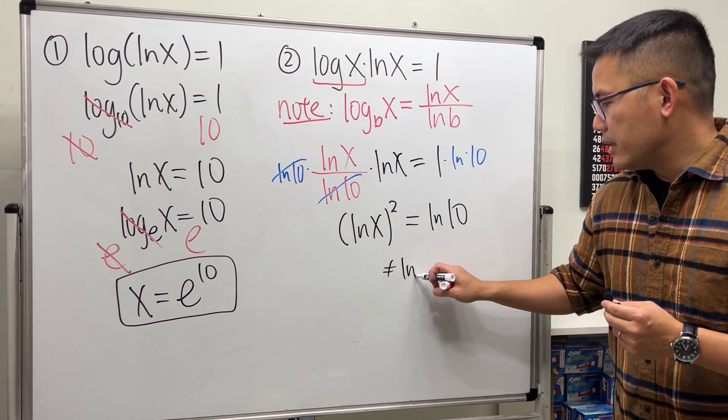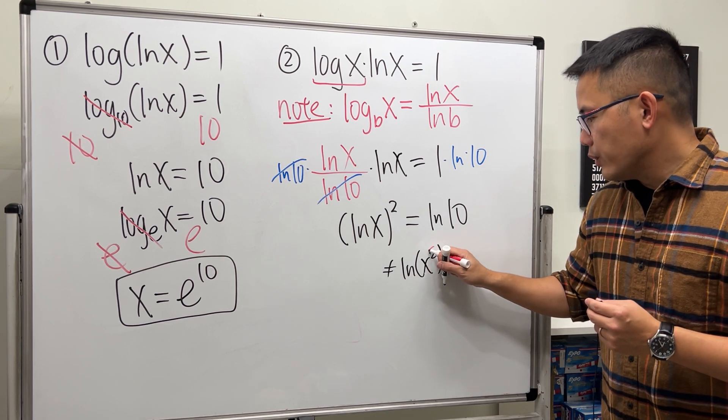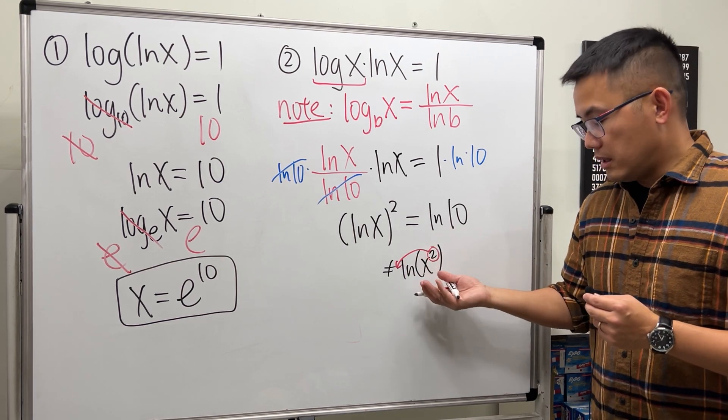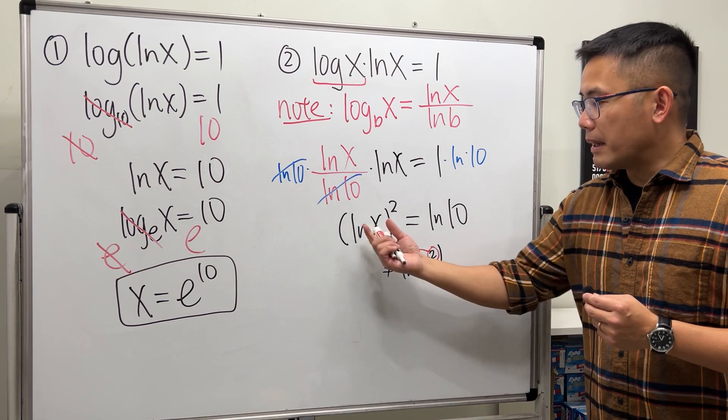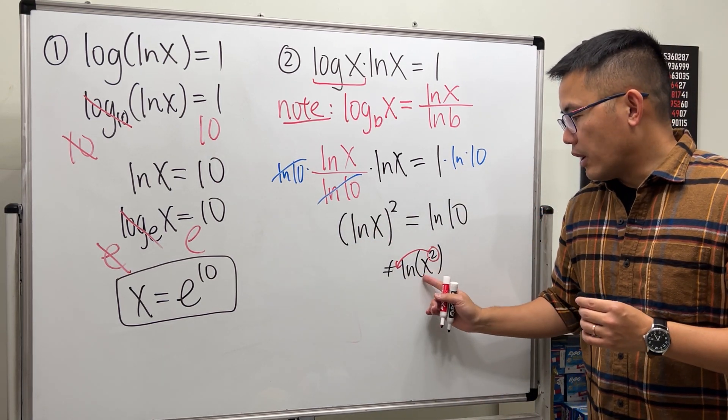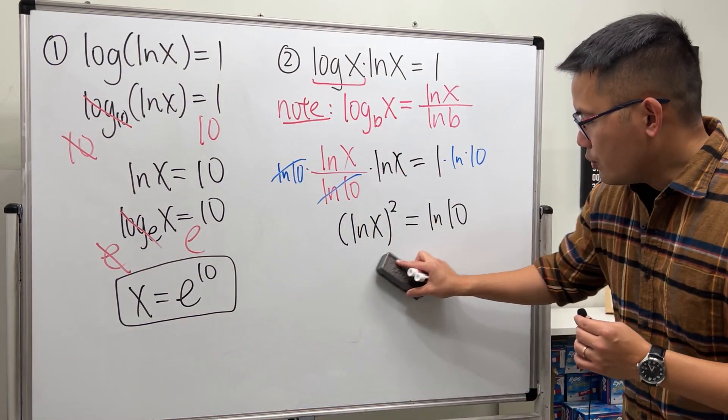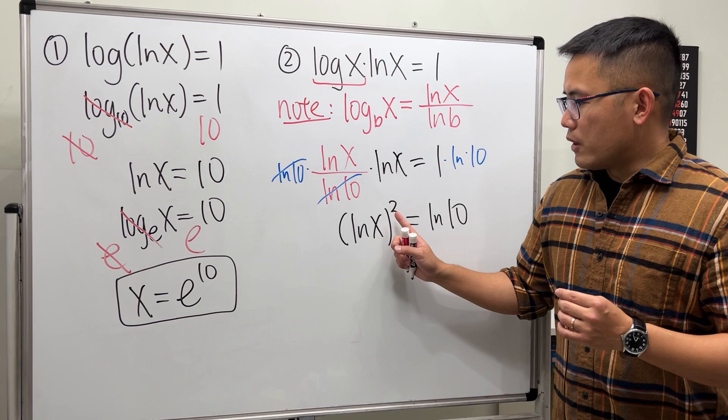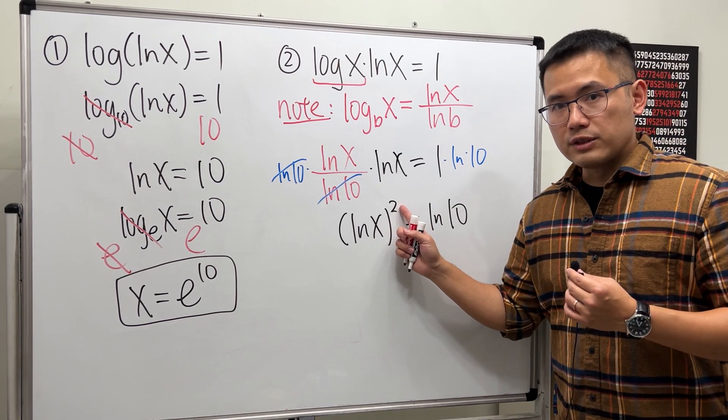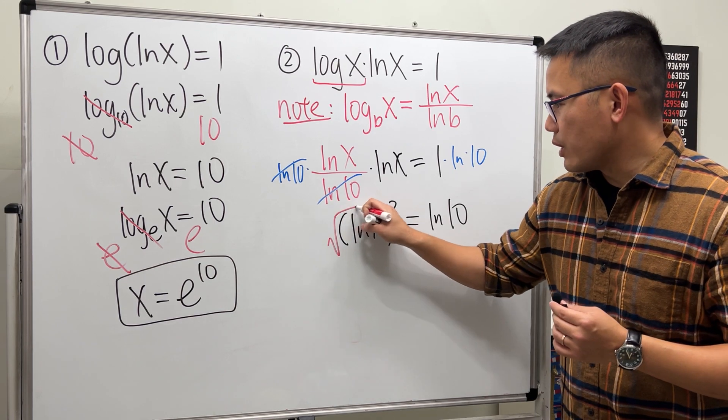If you have the square to the x then yes we can put the 2 to the front by the natural log property. But this means ln x times ln x. This means ln of x times x, so they are different. So to solve for the x right here we are going to get the square root first. To do so we are just going to take the square roots on both sides.